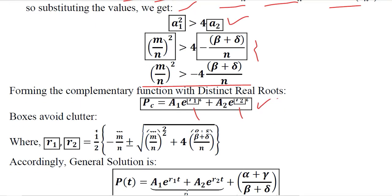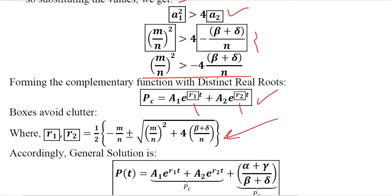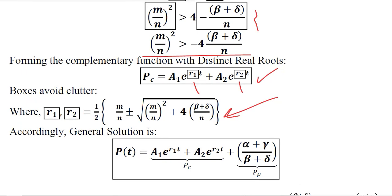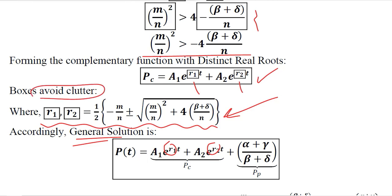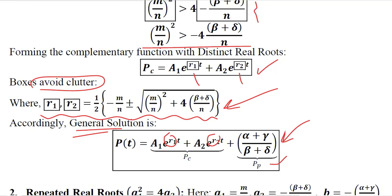R1 and R2 are lengthy terms, so we haven't substituted them in the general solution formula — we have kept them as they are to avoid clutter, as it would be very difficult to make sense of otherwise. The particular integral found in the last video is substituted because it is manageable. This will be the complementary function in the distinct real root case, and this will be the general solution.